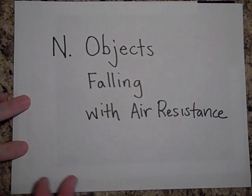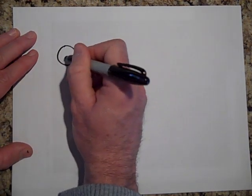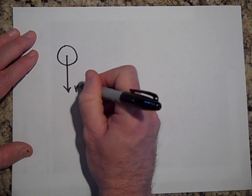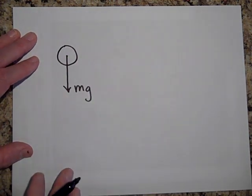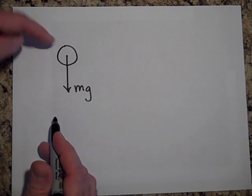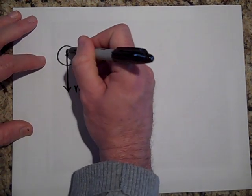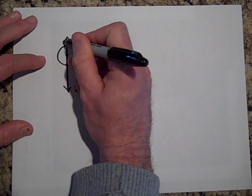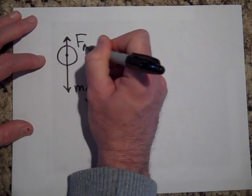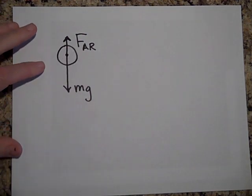Okay, I'd like to tell you about objects falling through the air with some air resistance. If you have an object falling through the air, the earth pulls on it with mg of force. But as it plows through the air, the air pushes upward. The object pushes down on air, air pushes up on the object. How much force this is I'll call F sub AR for air resistance.